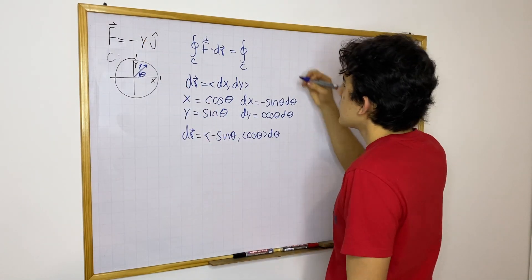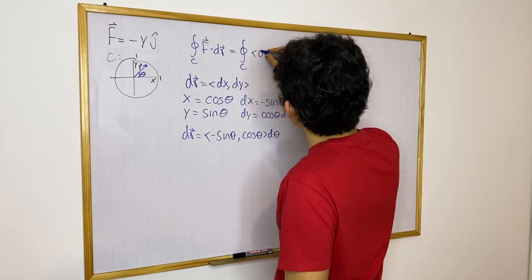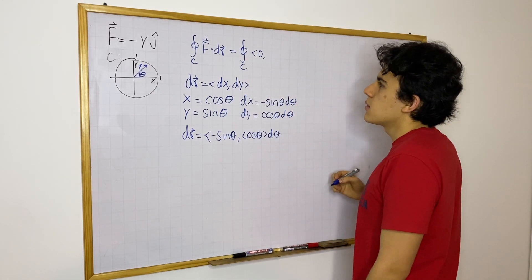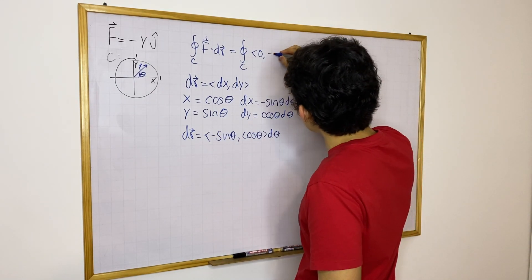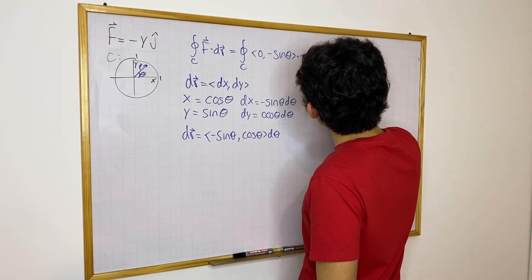and then f is going to be minus y hat, minus y, sorry, minus y j hat. So then this will be zero and f, well, that's just going to be minus y, which is minus sine. So then minus sine theta dot dr,